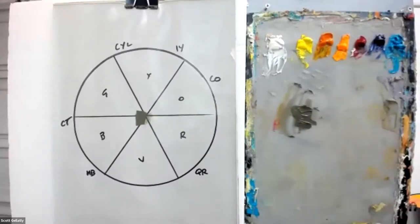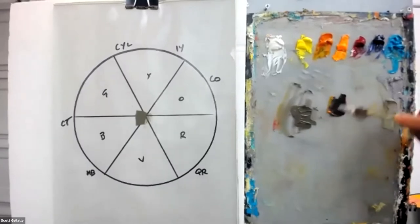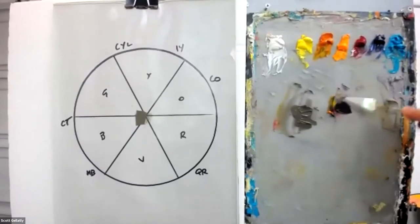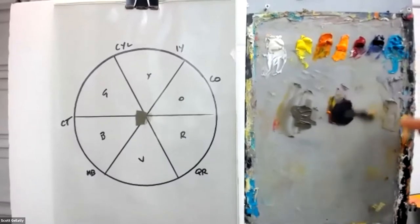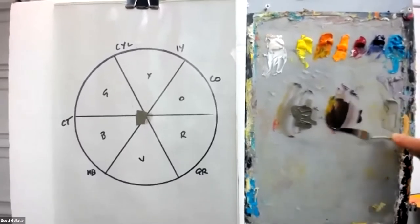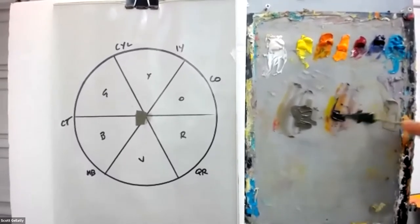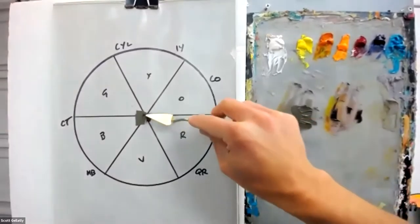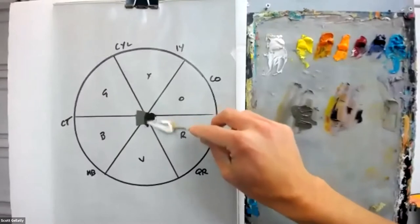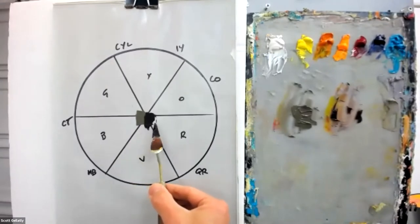And next I'm going to make a neutral out of my three transparents. That's Indian yellow, quinacridone red, and ultramarine blue. And you'll see just how much darker that is in value. An opaque neutral and a transparent neutral.